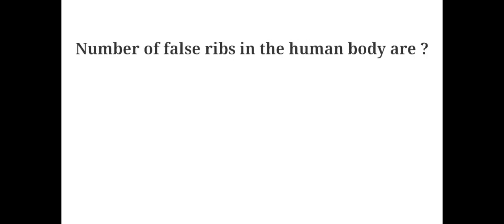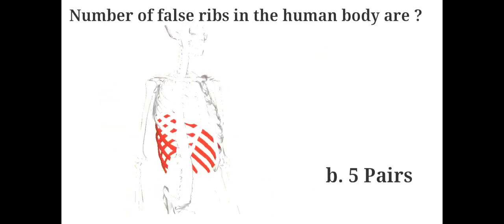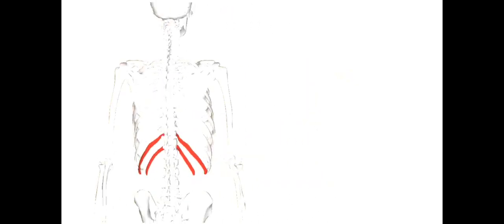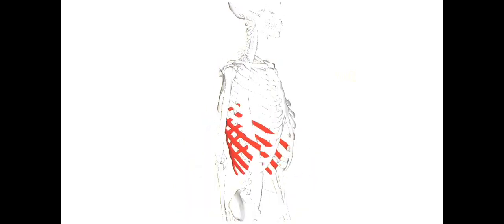Number of false ribs in the human body are: A. Two pairs, B. Five pairs, C. Six pairs, D. Twelve pairs. The answer is B. Five pairs. The first seven pairs are attached directly to the sternum by coastal cartilages and are called true ribs. The 8th, 9th and 10th pairs do not join the sternum directly but connect to the 7th rib by cartilage, hence called false ribs. The 11th and 12th pairs are attached only to the vertebrae and are called floating ribs. In total, humans have five pairs of false ribs.